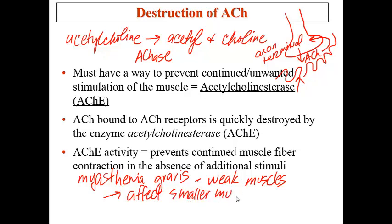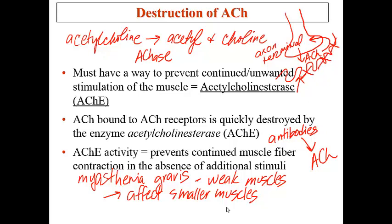When it affects the smaller muscles, eventually it will affect larger muscles as well. The cause of this disease is that it is an autoimmune disorder caused by antibodies to the acetylcholine receptor — the receptor is attacked by antibodies, which essentially block it. The common treatment is an acetylcholinesterase inhibitor: by blocking the enzyme that breaks down acetylcholine, acetylcholine remains present longer in the synaptic cleft and can bind to the motor end plate, producing stronger muscle contractions.